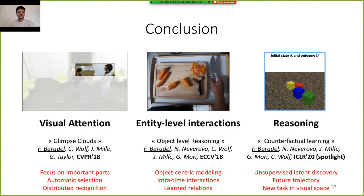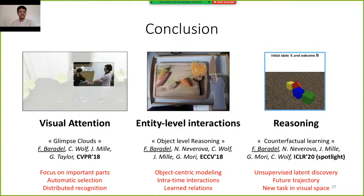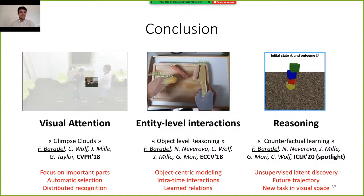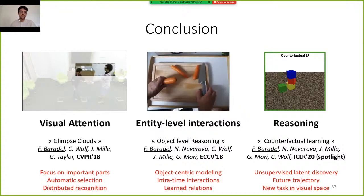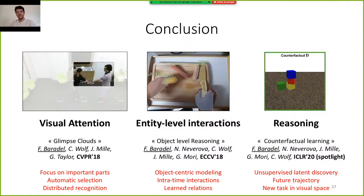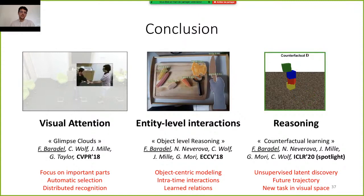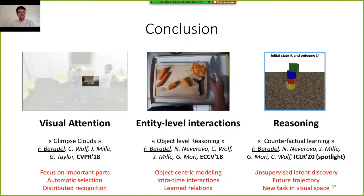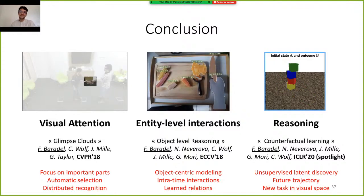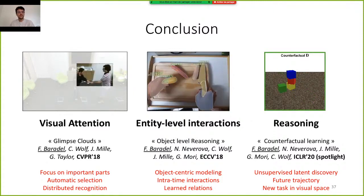In conclusion, we have seen that developing structural representations matters for video understanding and is a good way to obtain strong performance in both supervised and unsupervised settings. The attention mechanism is a way to focus on important parts of the image automatically. Looking at video from an object-centric perspective can improve performance and help check what meaningful representations the model has learned. Finally, we have discovered that we can go beyond supervised settings and learn latent embeddings of each object in an unsupervised manner, and we also proposed a new task in the visual domain.